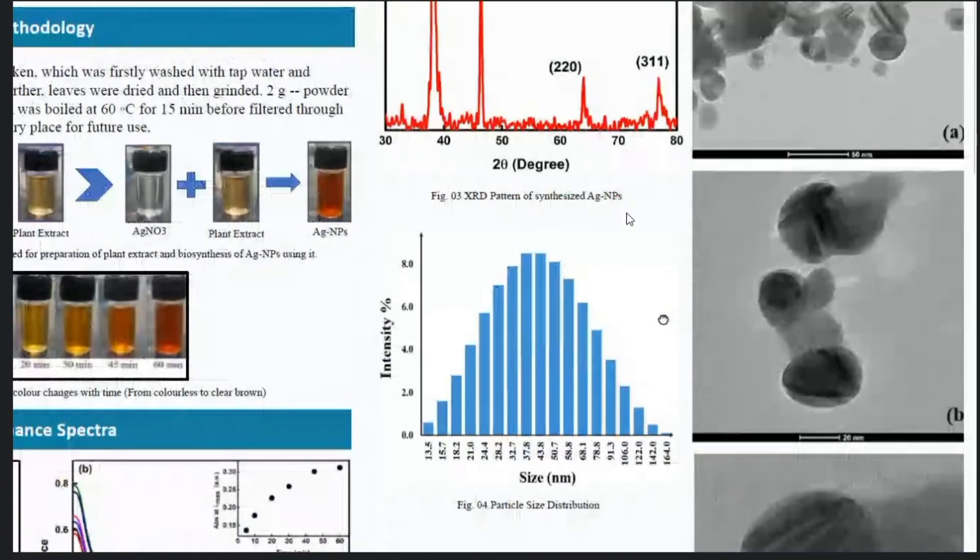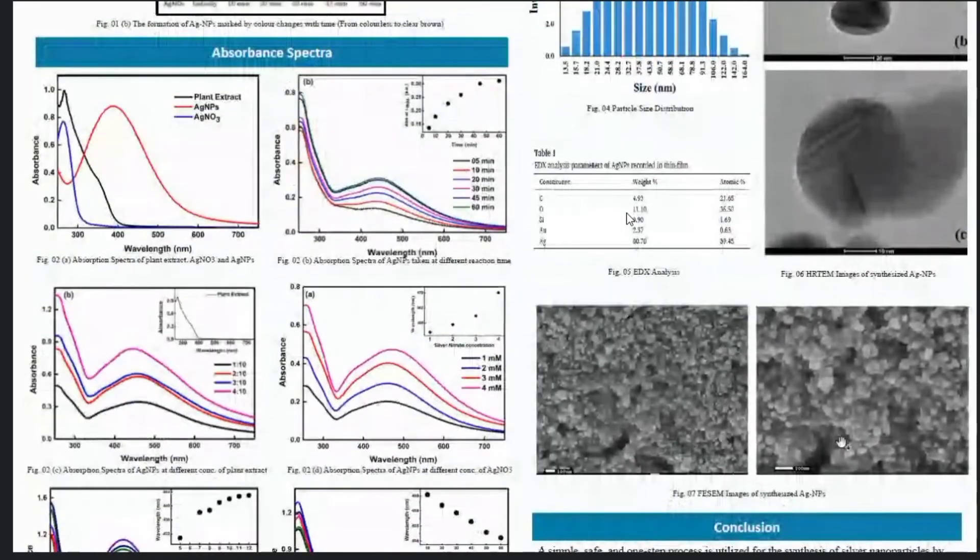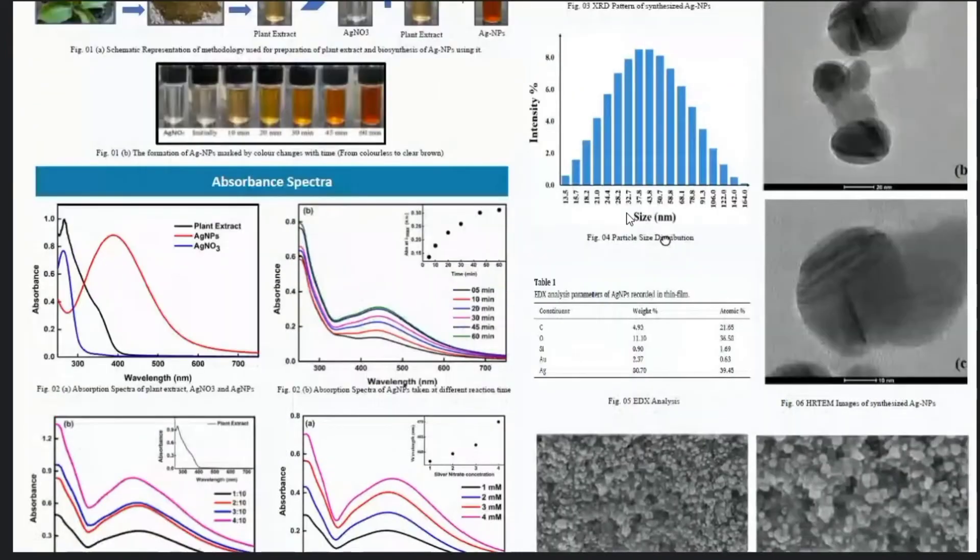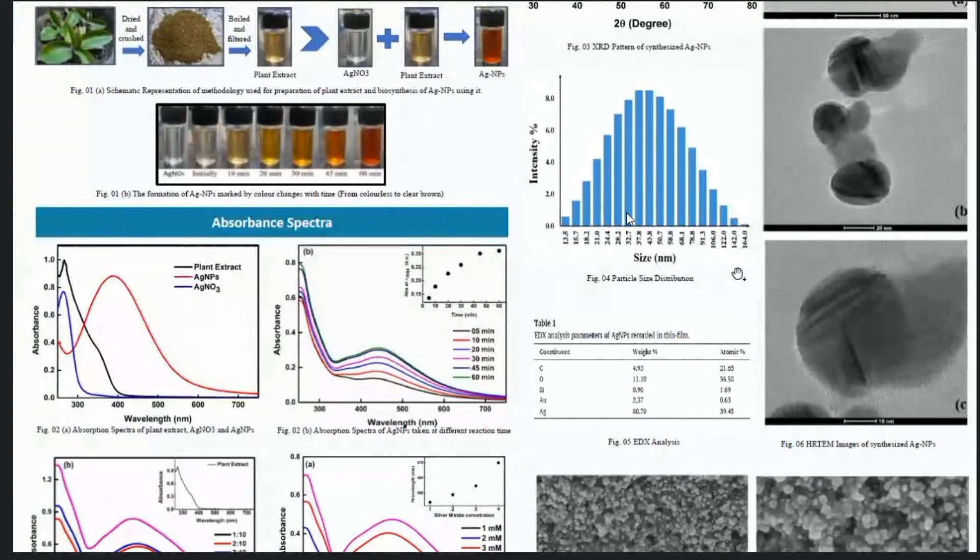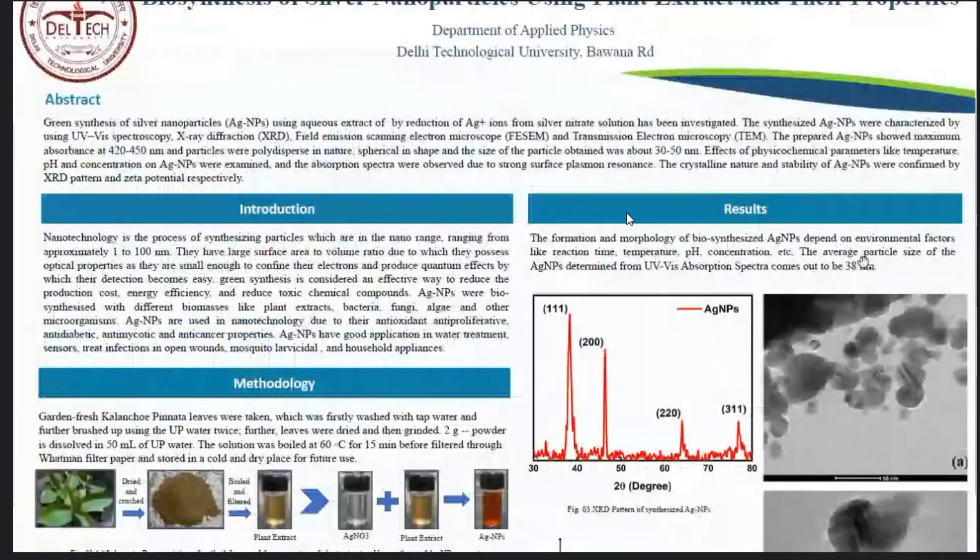The following figure shows the SEM and TEM images of the samples. We have seen that there was a single SPR band in our absorption spectra, which means there are spherical monodispersed particles and we can see that there are spherical particles. The TEM images also show lattice fringes, meaning the particles are highly stable. We have made a histogram of the sizes using ImageJ software and then fit a Gaussian to find the average particle size. The average particle size comes around to be 38 nanometers, which is in agreement to the size calculated from UV-Vis spectrum.